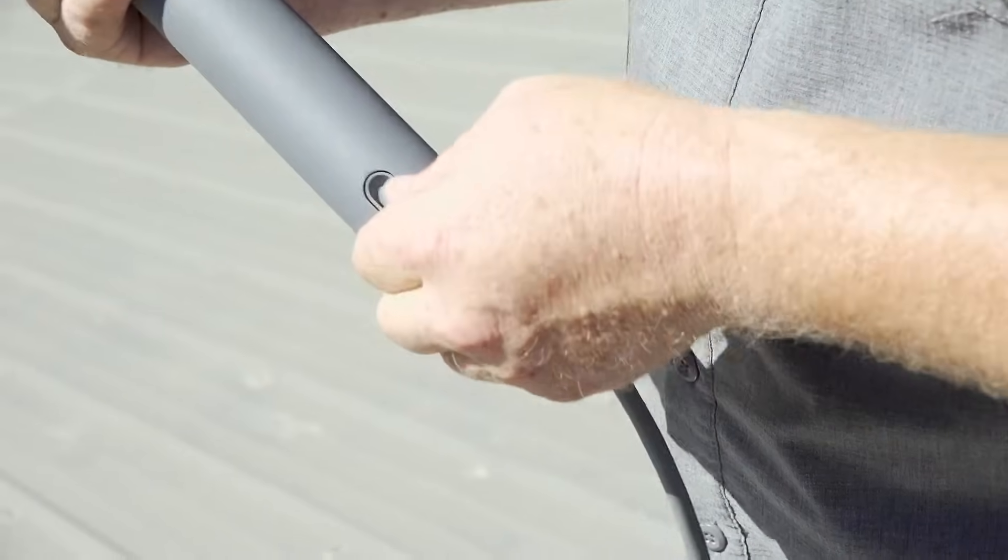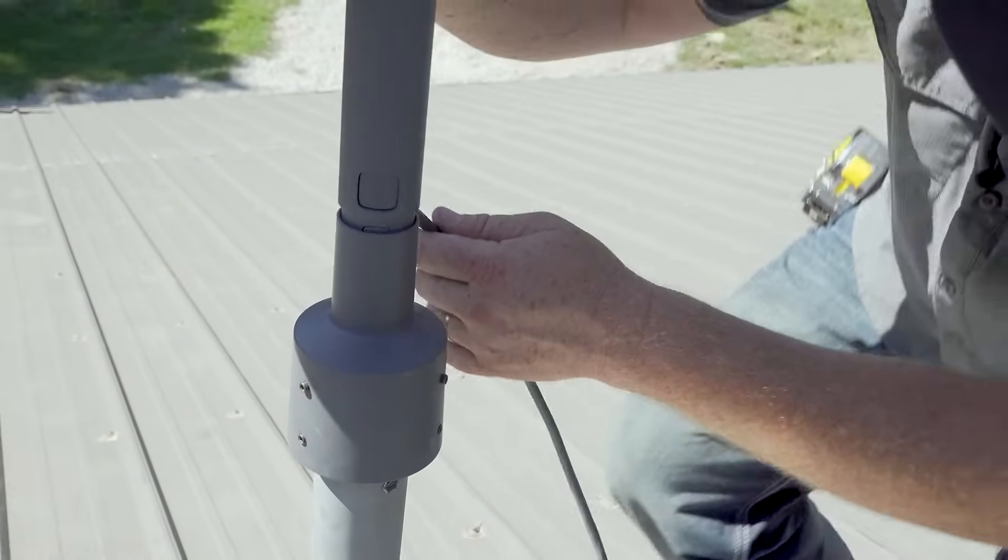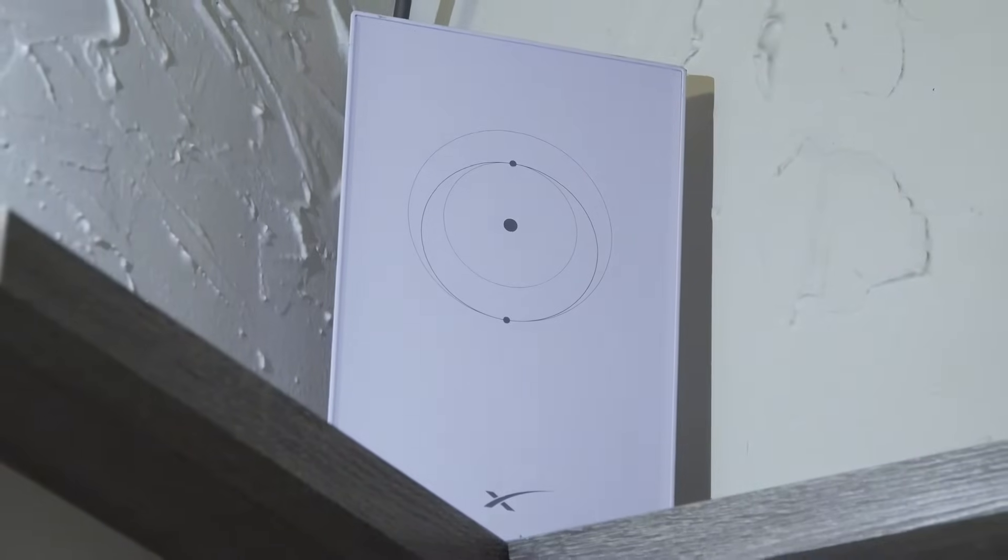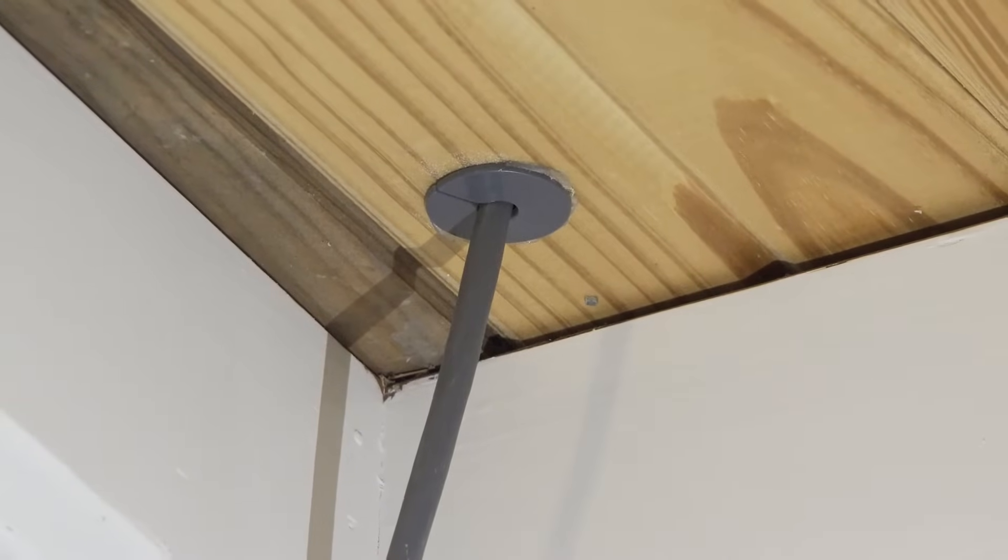Let's get everything connected so the Starlink can begin calibrating itself. Connect to the dish first, then bring the cable down to the location of your Starlink router. In our case, we ended up going through the attic.